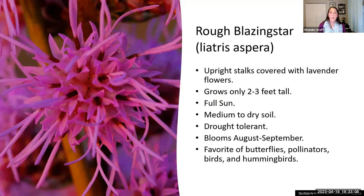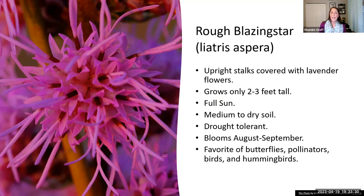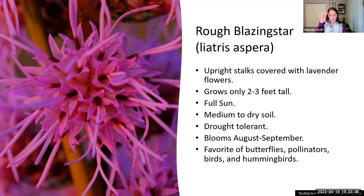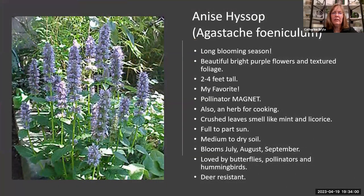Rough blazing star is similar to the prairie blazing star we saw earlier, but you can see from the picture that the flowers are a little different — they look curlier. It only grows about two to three feet tall, likes full sun, and can do drier soils — it actually does really well during drought times. It blooms in late summer and is a favorite of so many different pollinators. When you look at these flowers up close, the beautiful intricacy is just amazing — like nature's fireworks coming up the stalks.